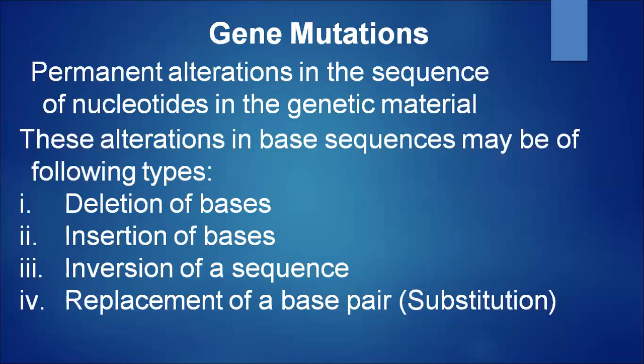Next: gene mutations, also known as point mutations. Point mutations occur at the molecular level and are caused by changes in nitrogenous bases present in DNA — permanent alterations in the sequence of nucleotides in the genetic material. Point mutations cannot be reverted back to normalcy in the next generation. These alterations in base sequences occur due to: deletion of bases, insertion of bases, inversion of a sequence, and replacement or substitution of a base.